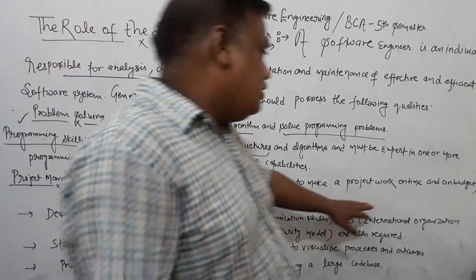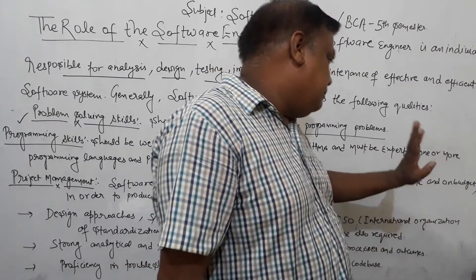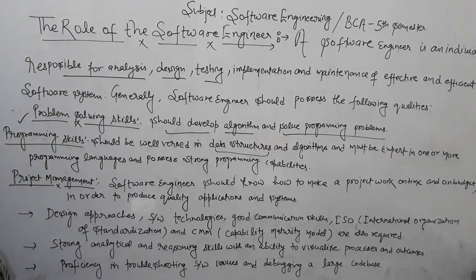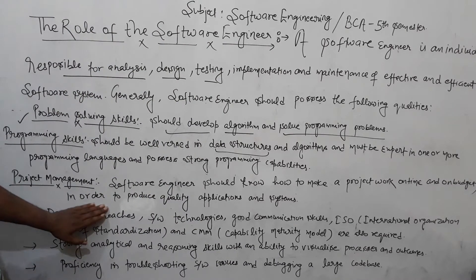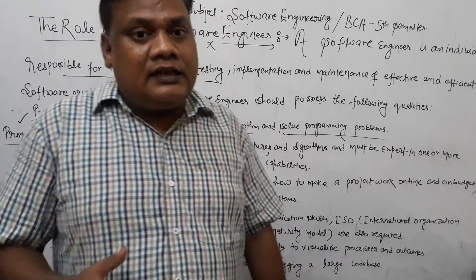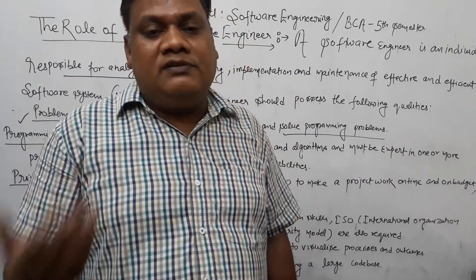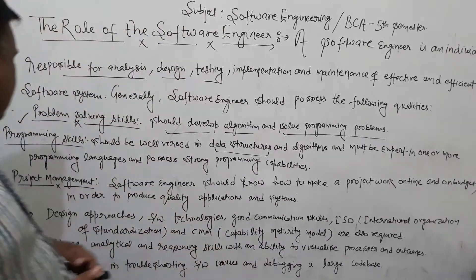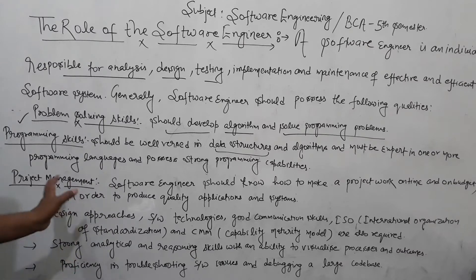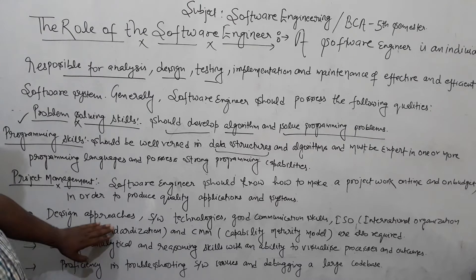Time management is very important — how to make a project work on time and on a budget. We need to know what to do within our budget in order to produce a quality application and system. Quality is the most important measure, and design approaches, project management skills, time estimation, and cost estimation knowledge are all required.